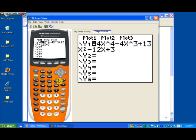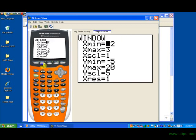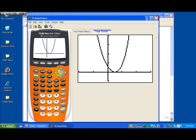If I hit the y equals key, you can see I went ahead and entered the function. And if I hit the window button here just to the right of the y equals key, notice here I used the scale from negative 2 to 3 on the x scale, negative 5 to 20, a y scale of 5 on the y scale. I'll go ahead and hit the graph key now.